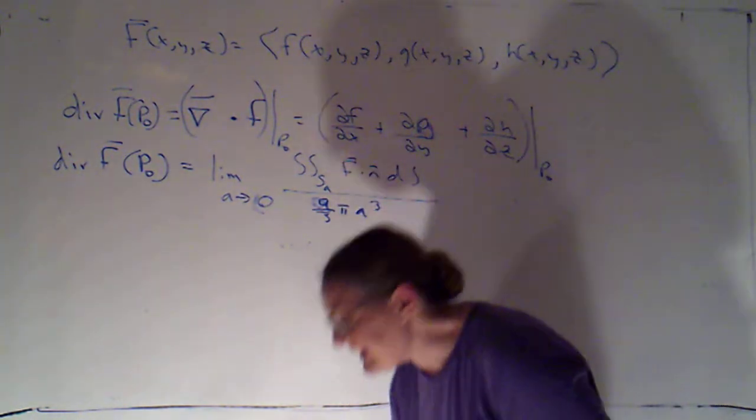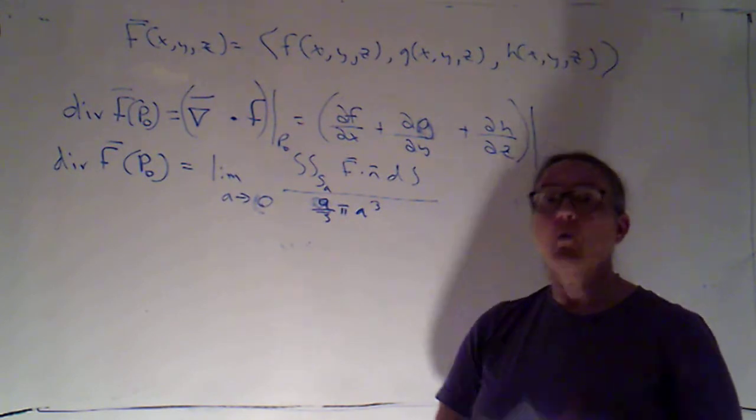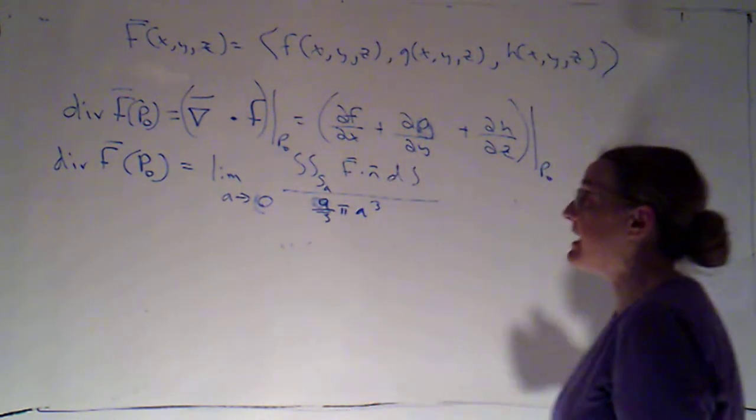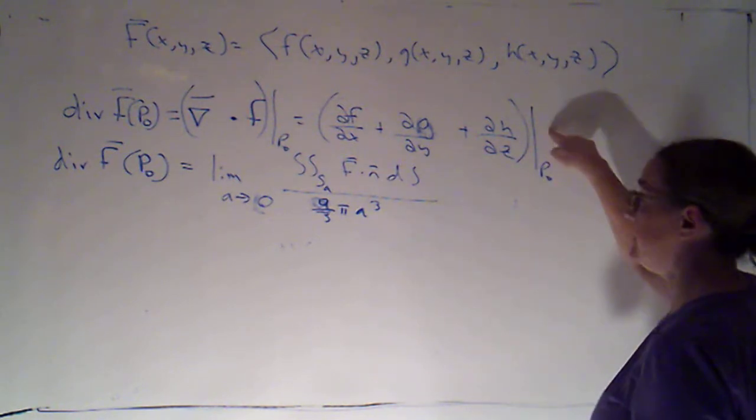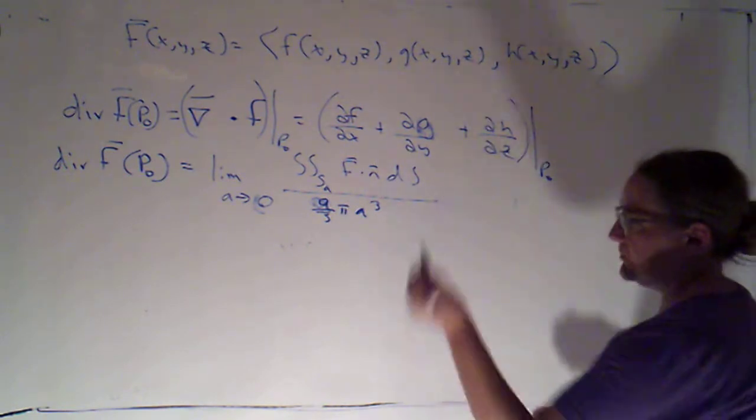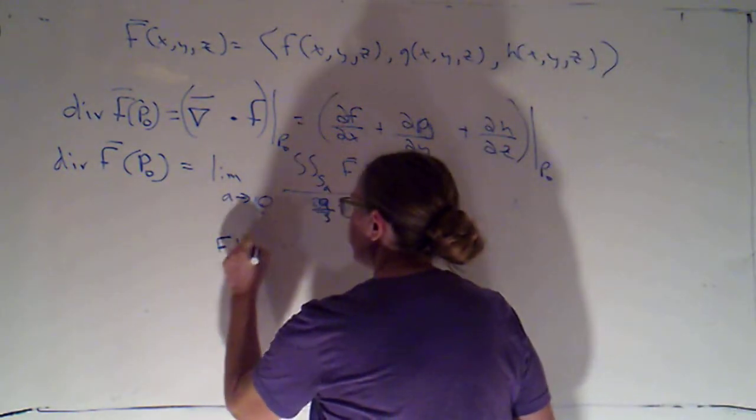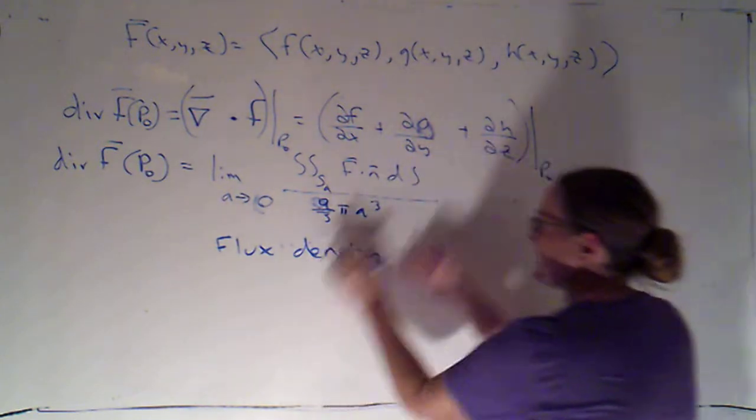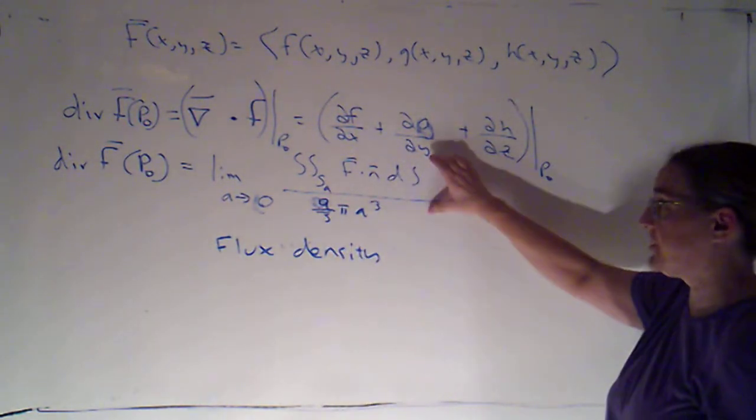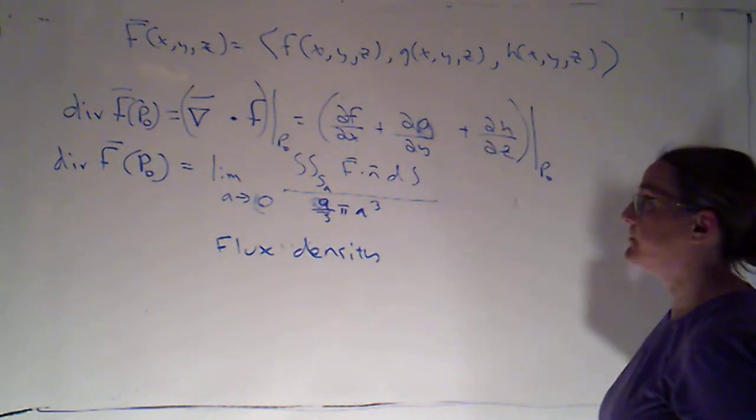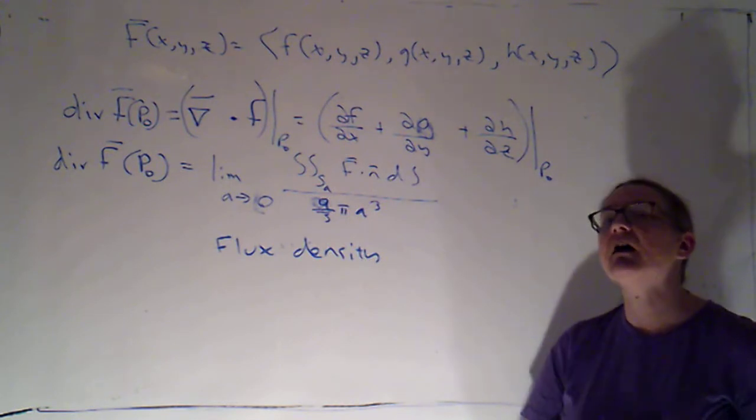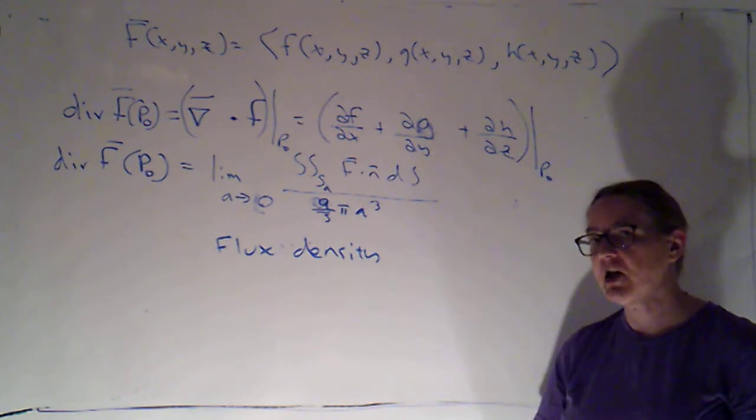Now, on an exam, I could ask you, what is the definition of divergence? If that's all I say, there are two correct answers. You could give me this, or you could give me this. And you could also just give it to me in words as flux density, because that's what this represents. So you could give me flux density either as a verbal description or by giving me the formula for it. What I might do is say, give me the definition of divergence of F at a point two ways.